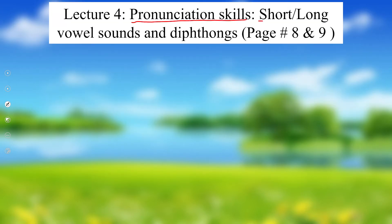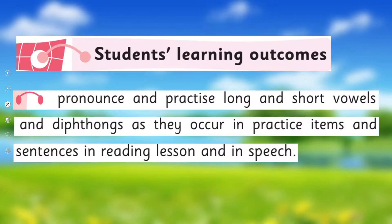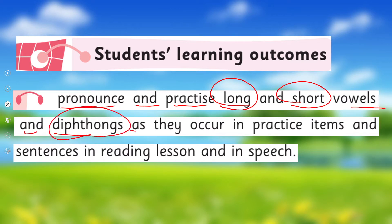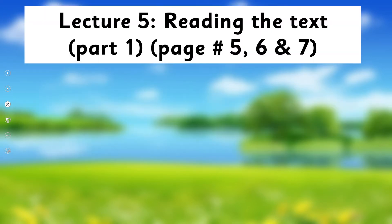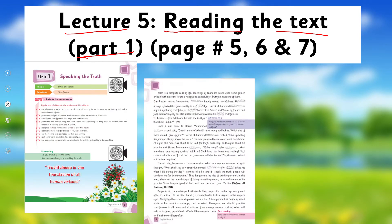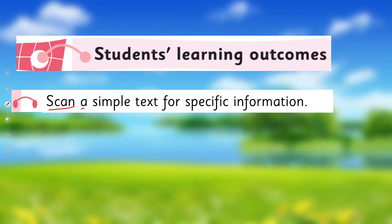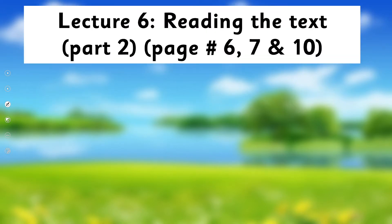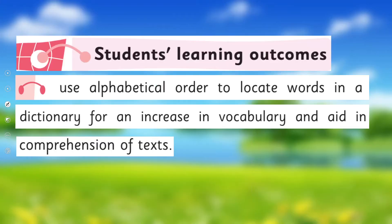Lecture 4, under pronunciation skills, we will learn short and long vowel sounds and diphthongs, covering pages 8 and 9 of the book. The SLO is to pronounce and practice long and short vowels and diphthongs as they occur in practice items and sentences. Lecture 5 will cover reading and understanding the text, pages 5, 6, and 7 of the book, with the SLO to scan a simple text for specific information.